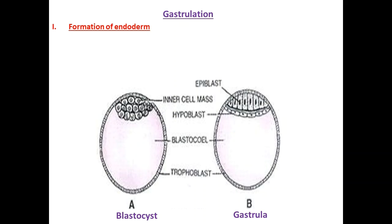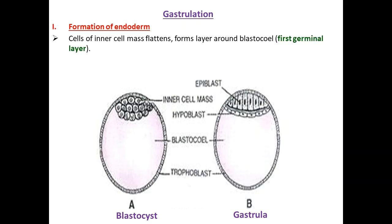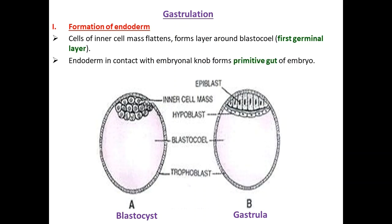How is endoderm formed? The inner cell mass flattens and forms a layer around the blastocoel. That is the first germinal layer - the endoderm. This endoderm, in contact with the embryonal knob or epiblast, will form the primitive gut of the embryo. The remaining part will gradually develop along with the trophoblast and hypoblast layers. From endoderm, the yolk sac, which is the extra-embryonic fetal membrane, will be formed.